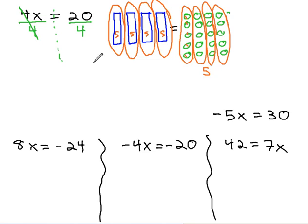With division, the 4's will divide out, and we find out that x is balancing with or equal to 5, like we expected. Notice 4 times 5 is indeed 20, like we wanted.